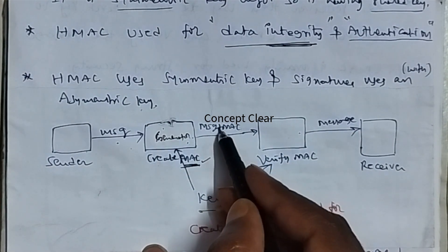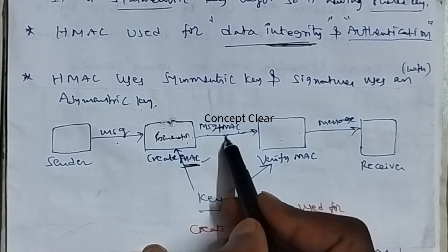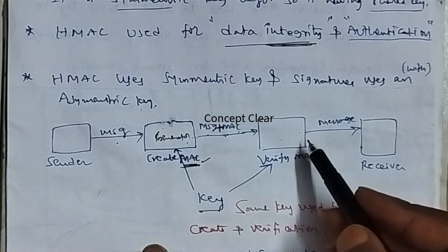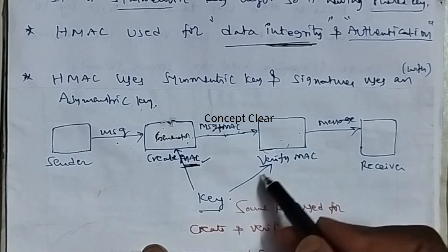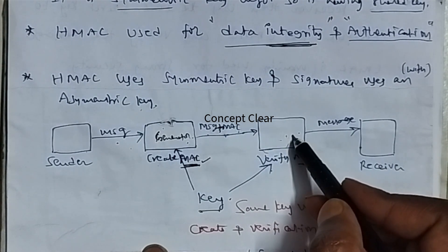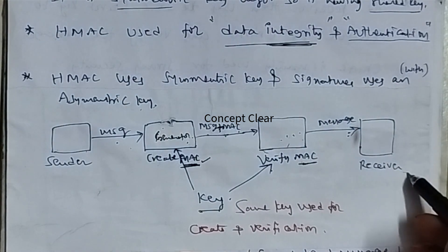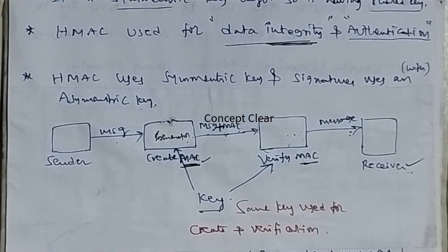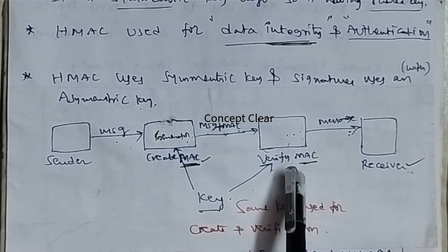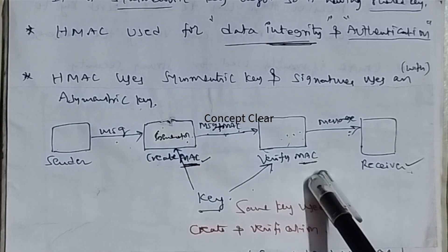After the MAC code is generated, the message sent over the network contains the message plus the MAC code. On the receiver side, using the same secret key, the MAC code is verified and converted back to the message, which is then displayed. The same key is used for both MAC code generation and MAC code verification.